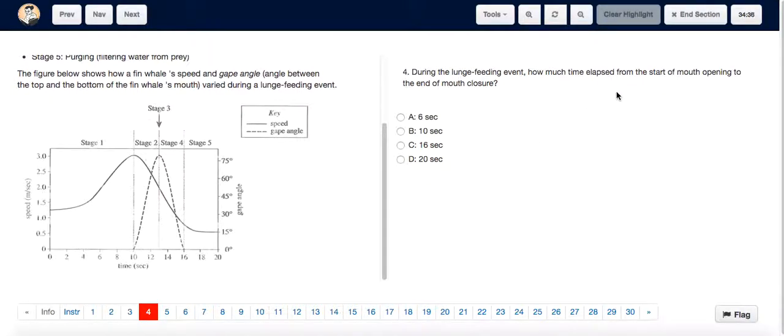For question 4, the start of mouth opening obviously happened when the gape angle of the mouth went from 0 and it started increasing. The mouth closure means that the gape angle went from its maximum back to 0.